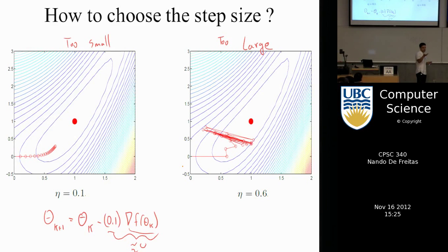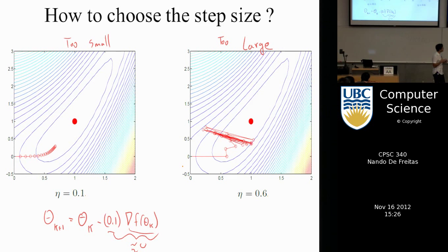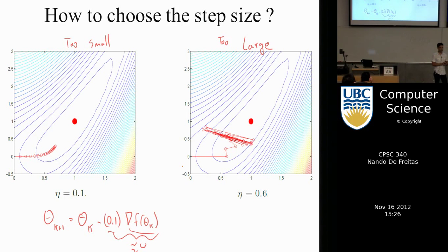In theory, if you make eta equal to 1/n you can get convergence. In practice, if you pick a small number like 0.1 and it's too slow, you adjust and will soon find a good alpha after a couple of simulation runs. If you want to be smarter about it, there's a technique called line search — I'll leave that for you to read about.